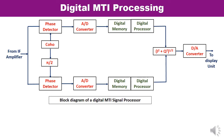Now let us look at the block diagram of a digital MTI signal processor. The input from the IF amplifier is fed to the phase detector. The output from the IF amplifier is split into two channels: one for the in-phase channel (I) and one for the quadrature channel (Q). These are given to their respective phase detectors.